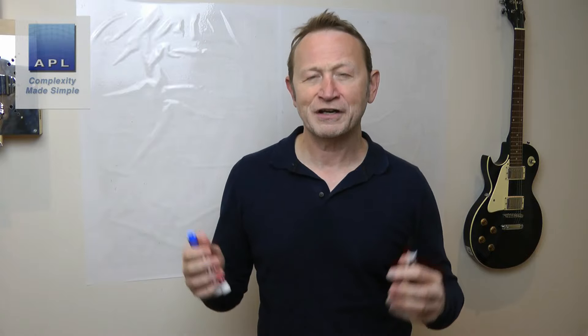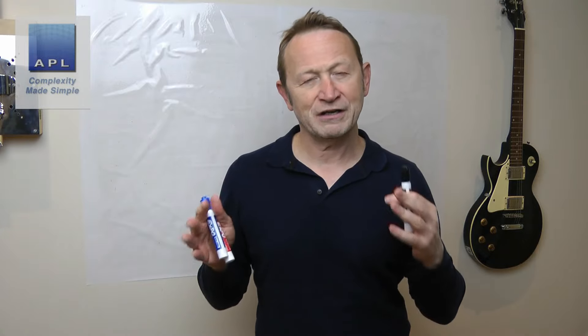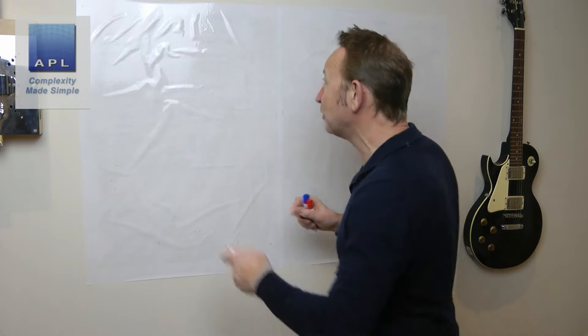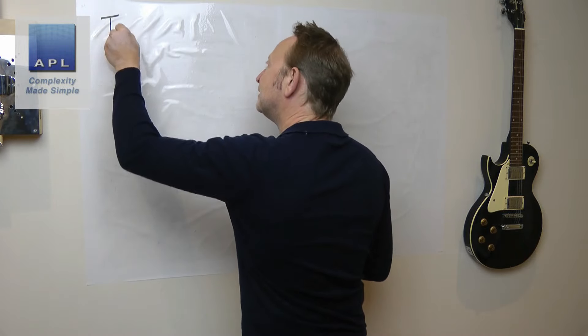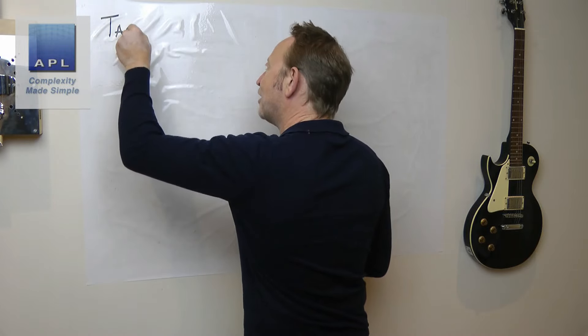Welcome to Complexity Made Simple, my name is Paul Allen. The subject of today's video newsletter: we're going to answer a question from Avish, who I think is in the United States. You've asked me a question about how to conduct a three-factor, three-level experiment — Taguchi style.